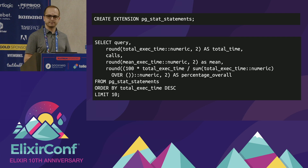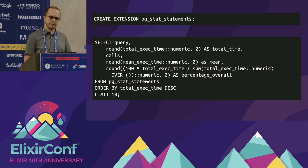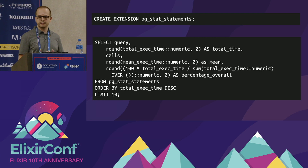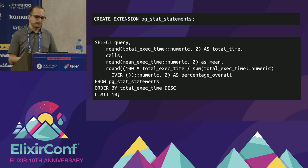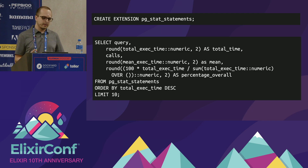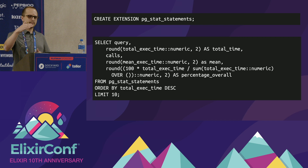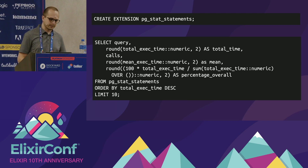I have a query that I like to run to find these issues before they become an actual problem. This query returns the parameterized version of the query — so if we look at our first query, the select from users where ID equals whatever, every single run of that query is going to look the same when parameterized. Where ID equals 10, where ID equals 11,000 — those all turn to the same parameterized query. The second column is total execution time across all runs. The third column is the number of times that query has been called. The fourth is the mean execution time. And lastly, total execution time as a percent compared to all other queries, ordered by total execution time descending so our slowest queries are at the very top.